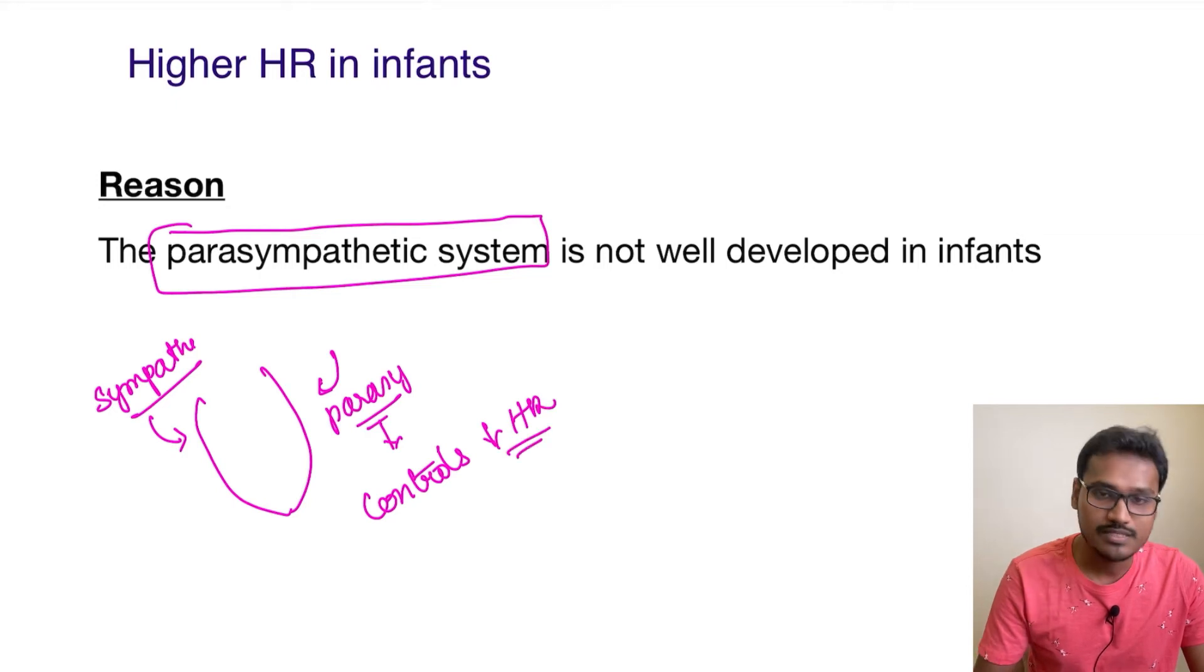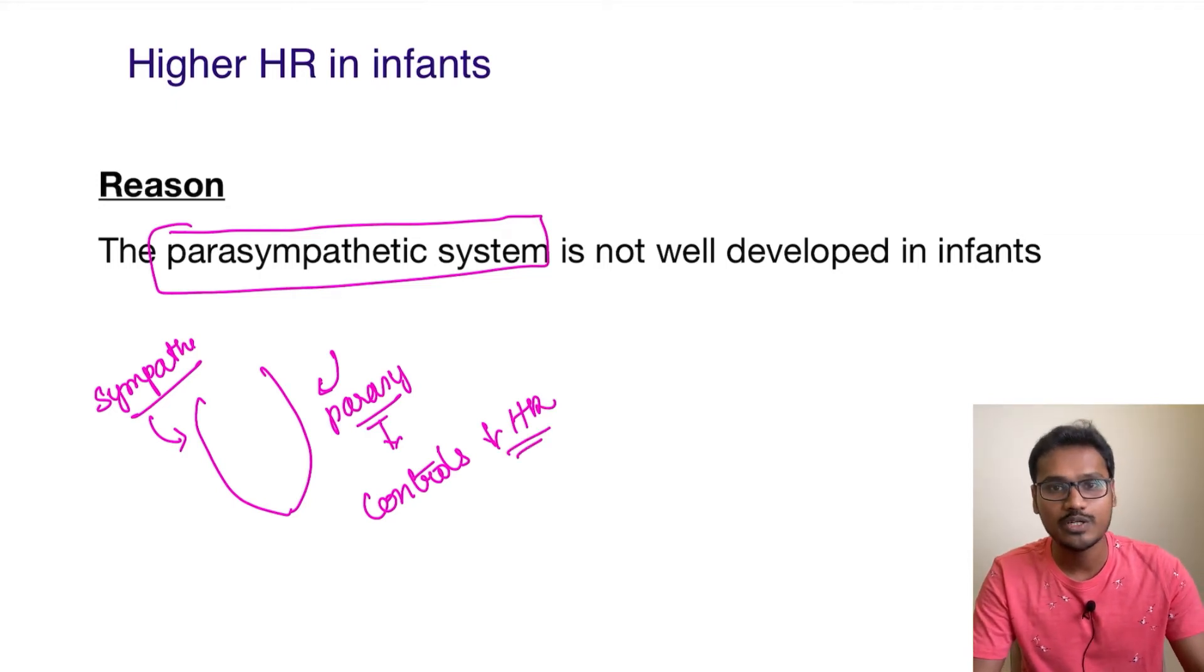Since this parasympathetic system is not developed, what will happen to the heart rate? It is going to shoot up very high. As and when the infant grows, this parasympathetic system is going to develop and mature, and they will tend to reduce the heart rate. That's why adults have a lesser heart rate in comparison to that of the infants.